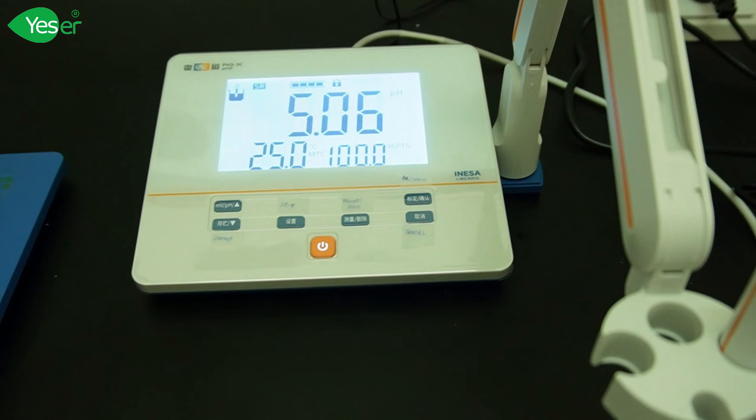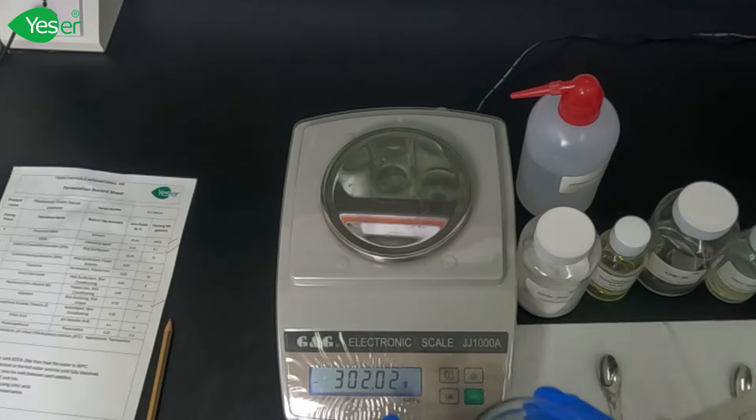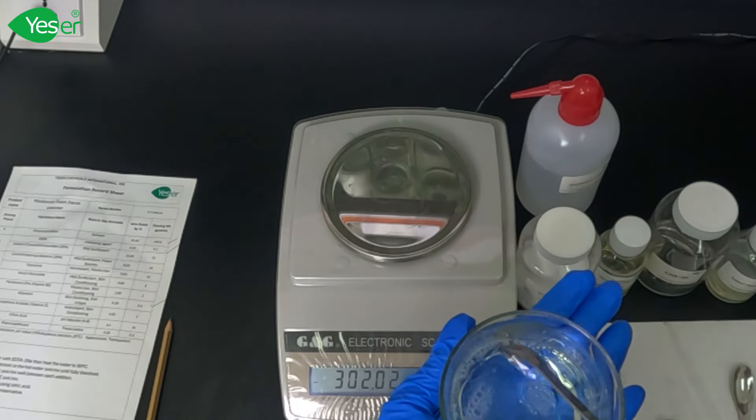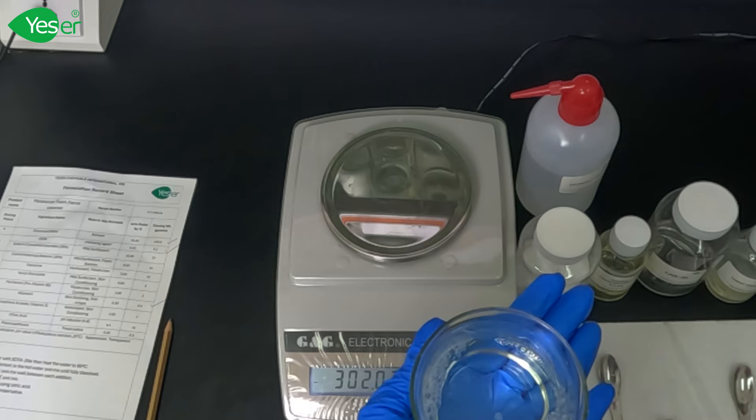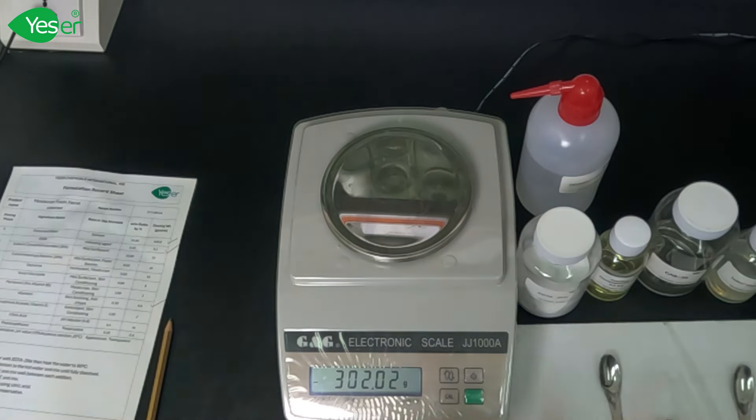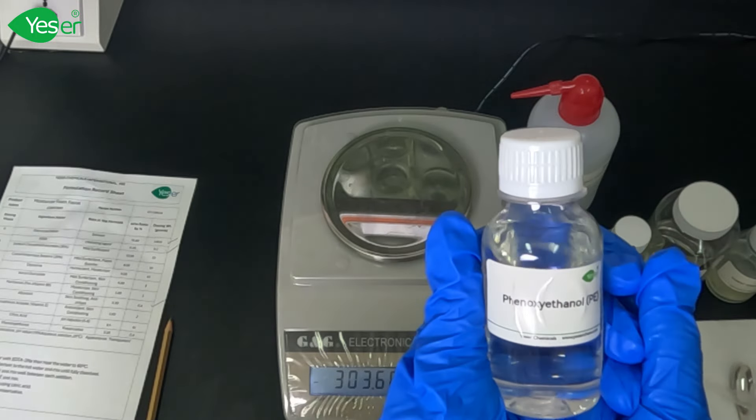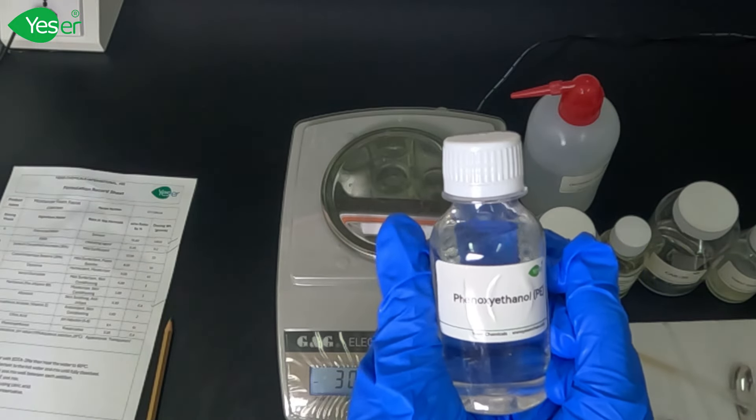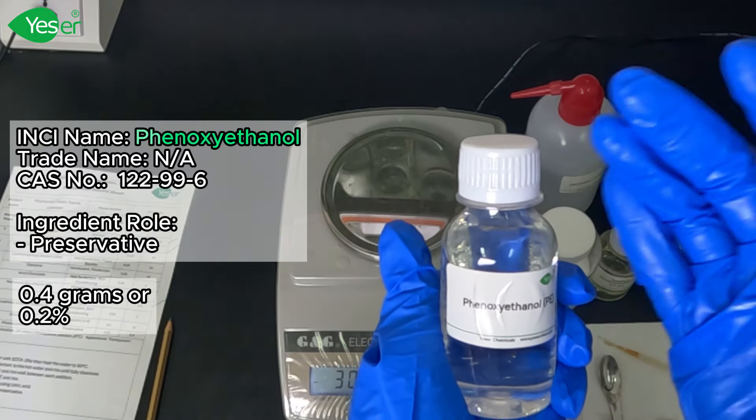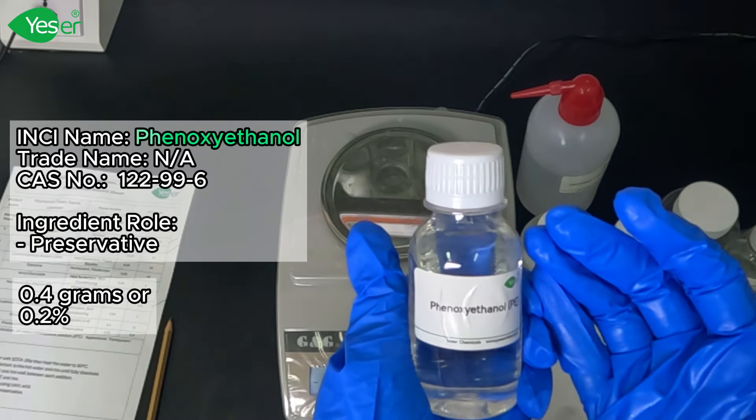After I prepare a 10% aqueous solution from the batch mixture, the pH reading of our product is 5.06, which is within range. Our product pH range is from 5 to 6. As you can see now, our mixture is clear. All our components are dissolved and mixed and homogeneous. Now we're going to add our last product for today, which is the preservative phenoxyethanol PE. Today we're going to use 0.2%, which is 0.4 grams.